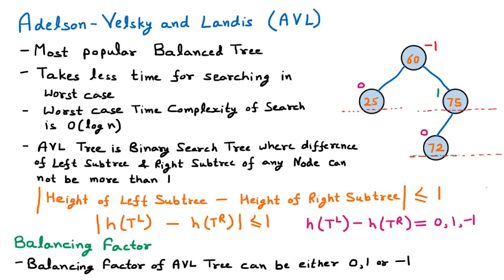We check whether all nodes follow the balancing factor property — that it must be 0, 1, or -1. Starting from the bottom: both leaf nodes have balancing factor 0, no problem. Node 75 has balancing factor 1, no problem. Node 60 has balancing factor -1, no problem. All nodes satisfy the criteria, so this tree is an AVL tree.